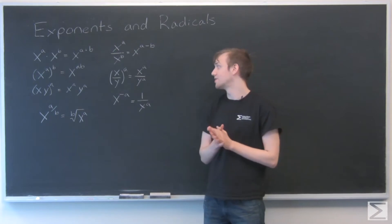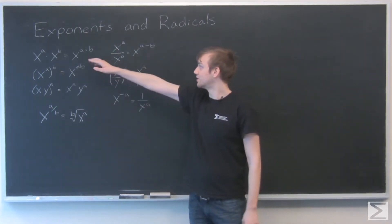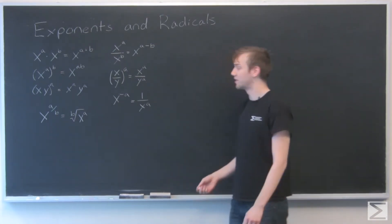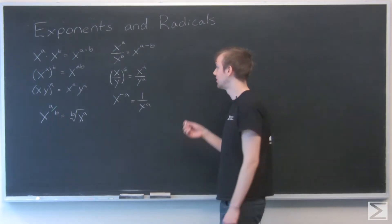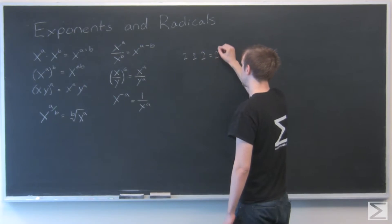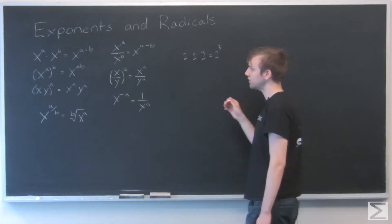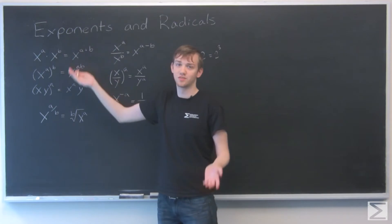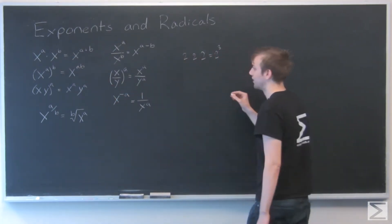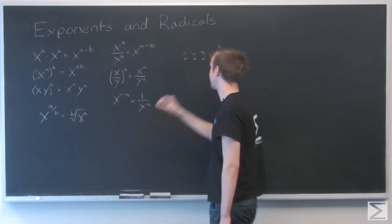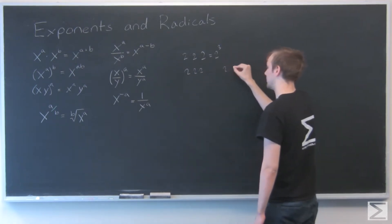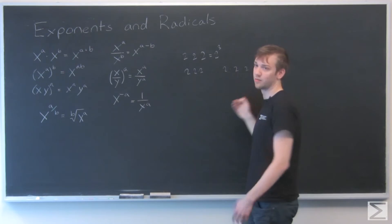The first rule is that x to the a times x to the b equals x to the a plus b. This comes from the fact that exponents represent repeated multiplication. So 2 times 2 times 2 equals 2 to the third. If you have a number times itself a certain number of times, times the same number times itself again, the answer is just the exponents added together — you just count them all up.